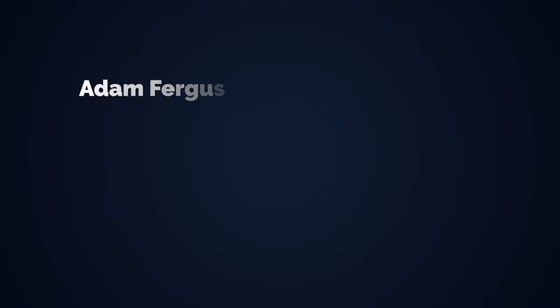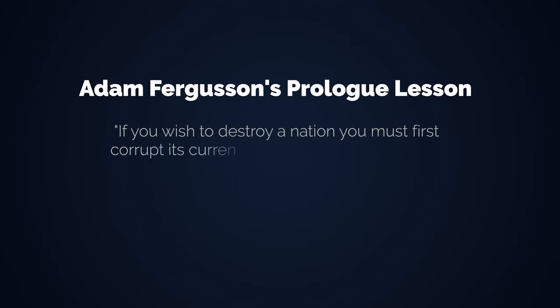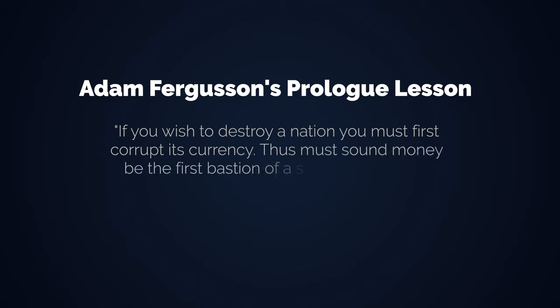Unemployment got much worse again, but within two years a German economy was being reconstructed and working. So how can we recap this whole incident? Adam Ferguson did it in the prologue of his book: 'If you wish to destroy a nation, you must first corrupt its currency. Thus must sound money be the first bastion of a society's defense.'